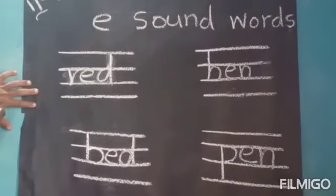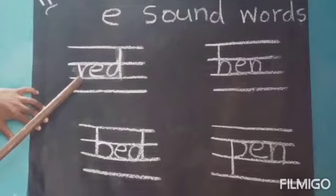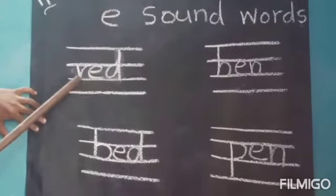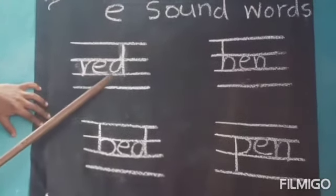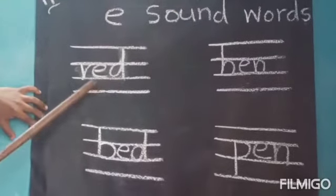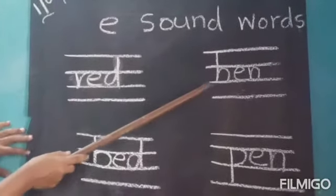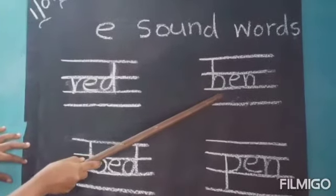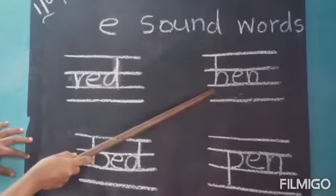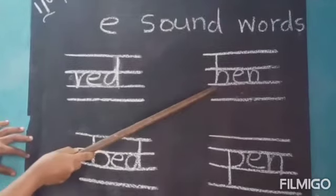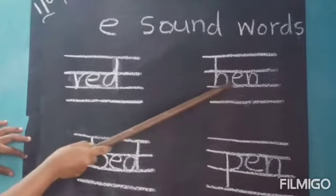Look, children. Today we learn E-sound words. What is the word? Red. Red. This one — H-E-N. Hen. H-E-N. Hen.